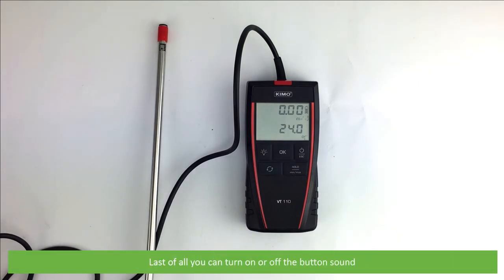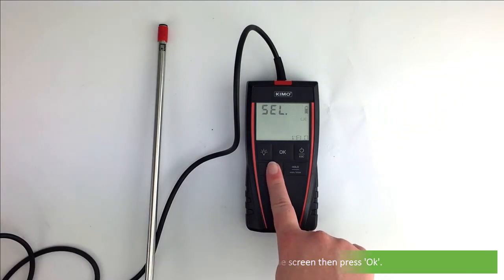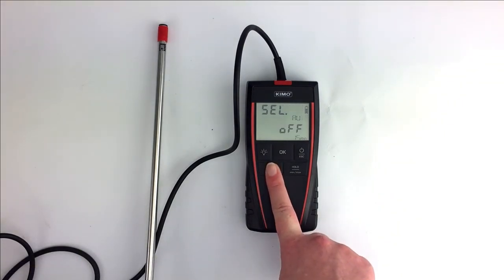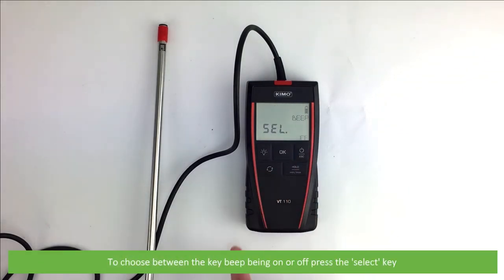Last of all, you can turn on or off the beeper sound. Press select until beep appears on the screen, then press OK. To choose between the key beep being on or off, press the select key.